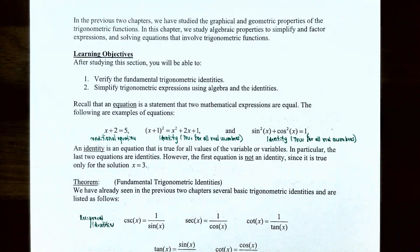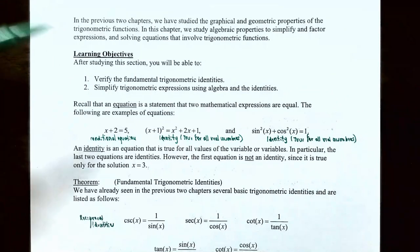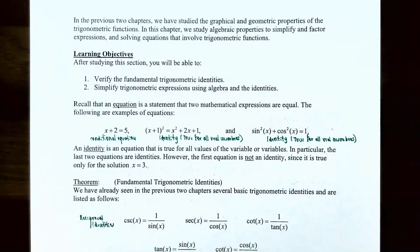We also have the identity sine squared of x plus cosine squared of x equals 1, which is the Pythagorean identity, true for all real numbers x. An identity is an equation that is true for all values of the variable or variables. The equation x plus 2 equals 5 is not an identity — it's only true for one particular solution.